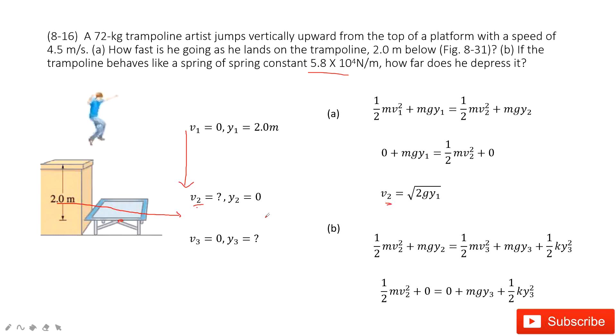And then, asks you how far he just depressed on this spring. So we need to find y3. So y3, how can we do that? We can consider it from the initial state to the final state or from V2 to V3. Which one you prefer? And there, we select state 2. State 2 to state 3.